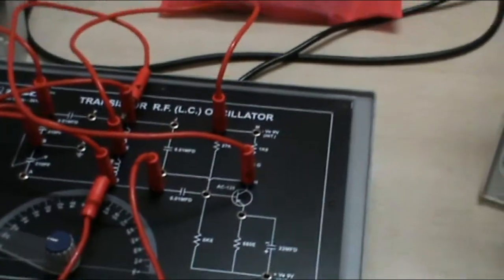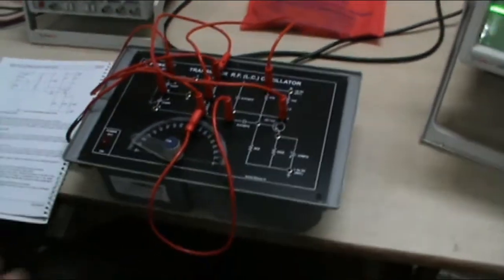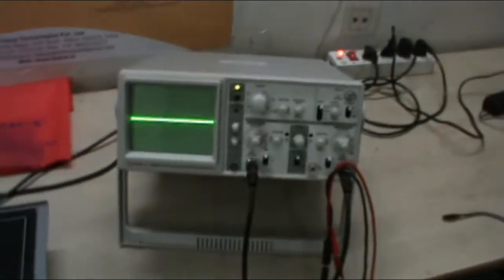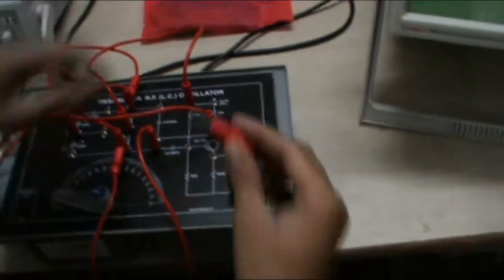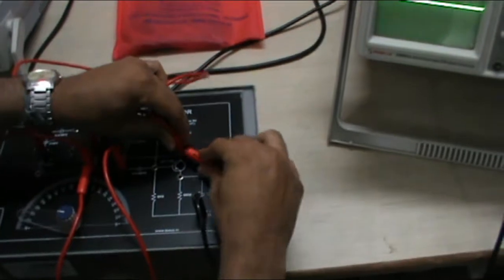Now, we will connect a CRO cable to the channel 1 of CRO and take the output waveform generated by the oscillator. We will put the negative to the ground over here and positive to H to see the output waveform.